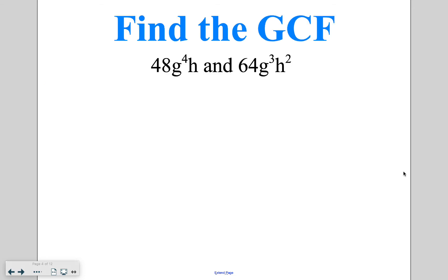We're going to start by just practicing finding the GCF. I've got the two monomials of 48g to the 4th h and 64g to the 3rd h to the 2nd. When you are finding the GCF you're going to first start by looking at the factors of the number.